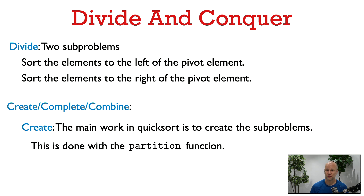In QuickSort, you don't know where the pivot element should go initially — you have to work to figure that out. Since we don't know where the pivot should go, we actually don't know what the sub-problems are. It's only after we put the pivot in the right place that we know what the sub-problems are. So the main work of QuickSort is in the create step, which is exactly what the partition function does.